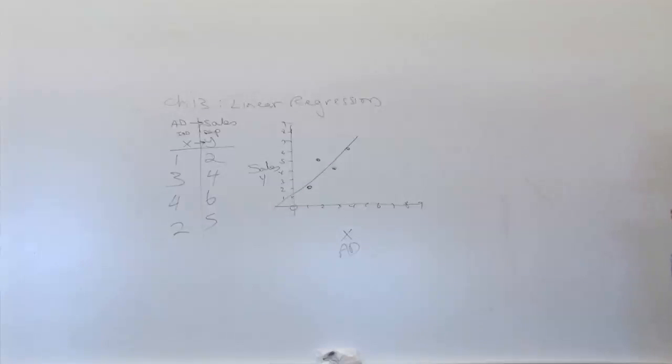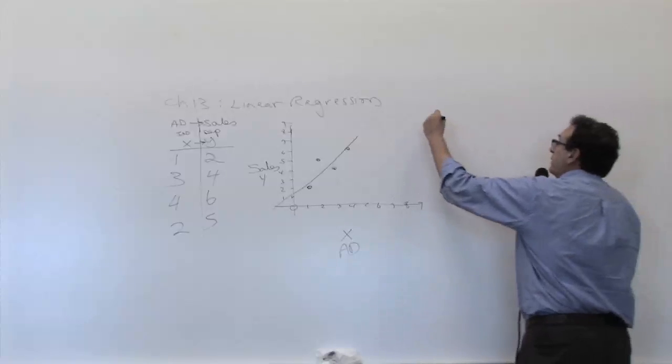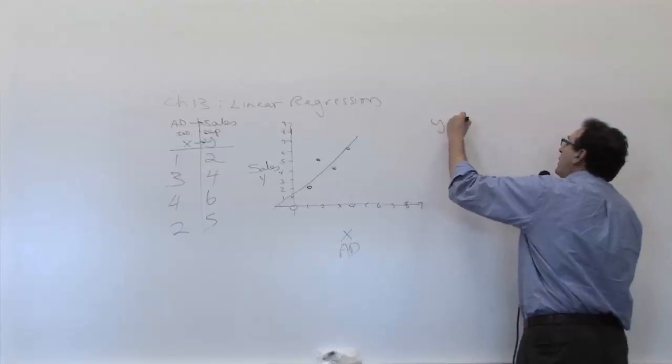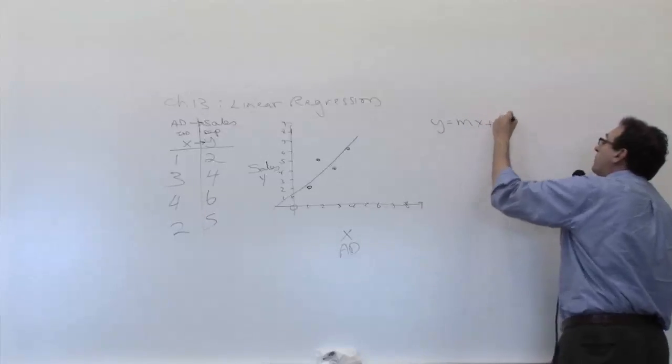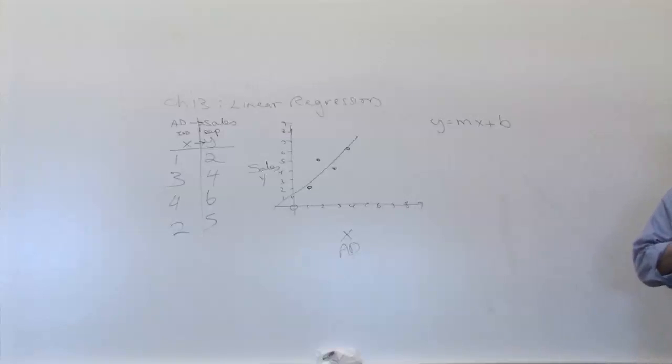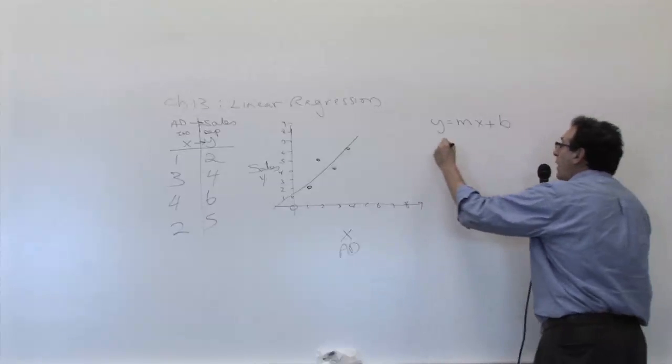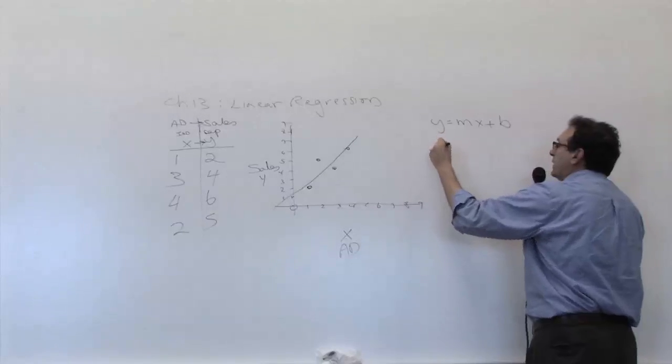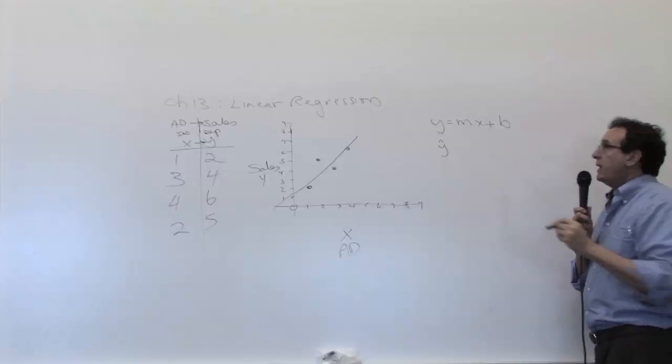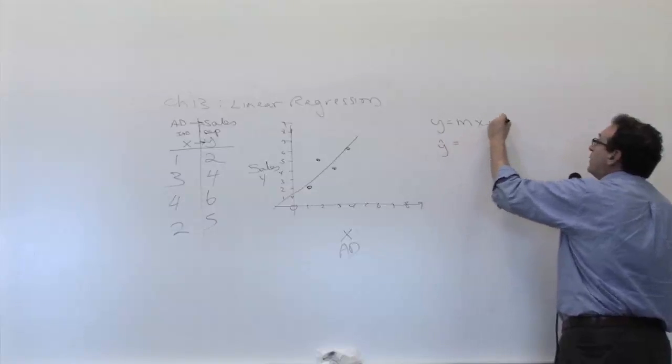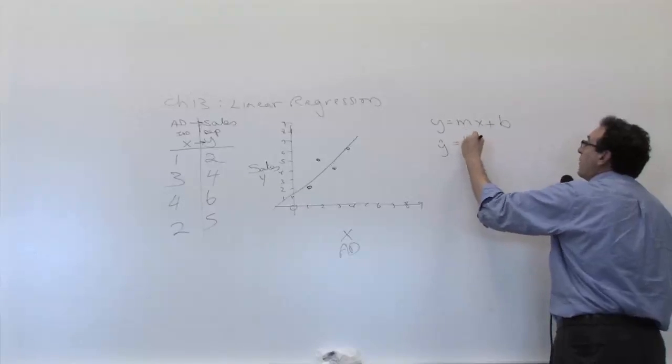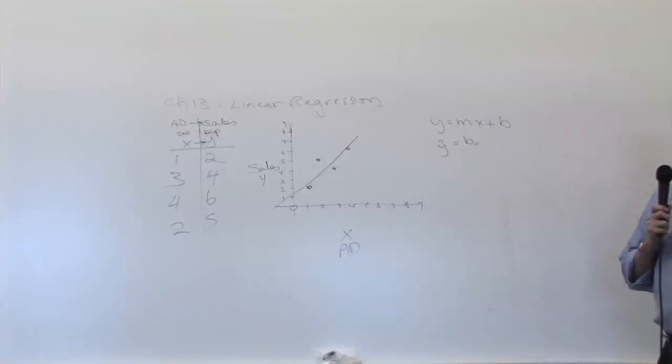The next thing is to estimate the equation Y equals MX plus B. But before we do that, I have to unfortunately give you guys bad news. Even though everybody knows that equation already from many years of using it, we're going to change it in this particular chapter. Instead of calling it Y, we're going to call it Y hat. Did I mention this last time? I don't think so. Instead of calling it B, we're going to put the B at the beginning of the equation, and we're going to call it B sub zero. That's not too much of a difference.